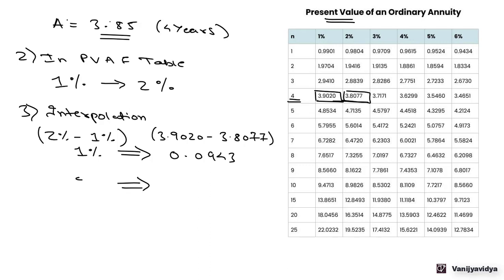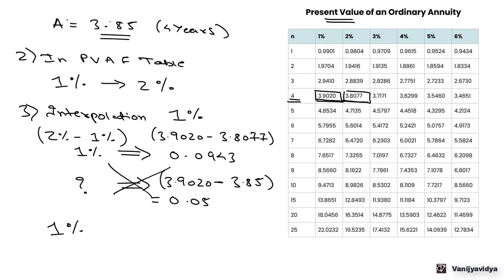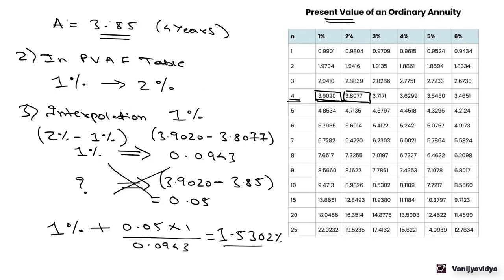Now we need to find out for what difference in the discount rate, the present value annuity factor is 3.85. Taking 1% as the base, the annuity factor at 1% is 3.9020. So 3.9020 minus 3.85 equals 0.05. Cross-multiplying: 1% plus (0.05 × 1) divided by 0.0943 gives us 1.5302. So IRR is 1.5302%, at which the annuity factor is 3.85.